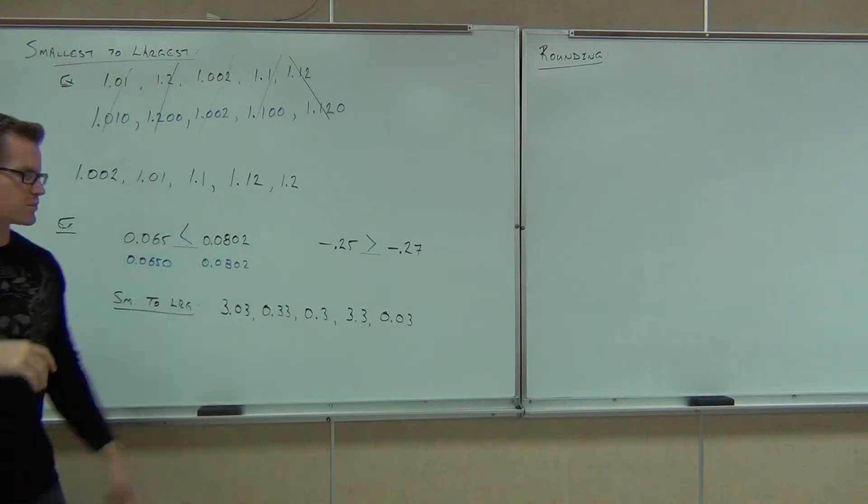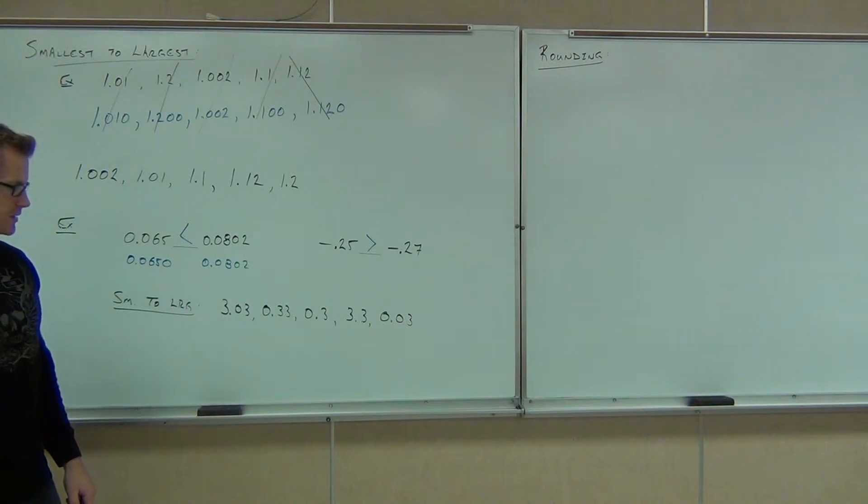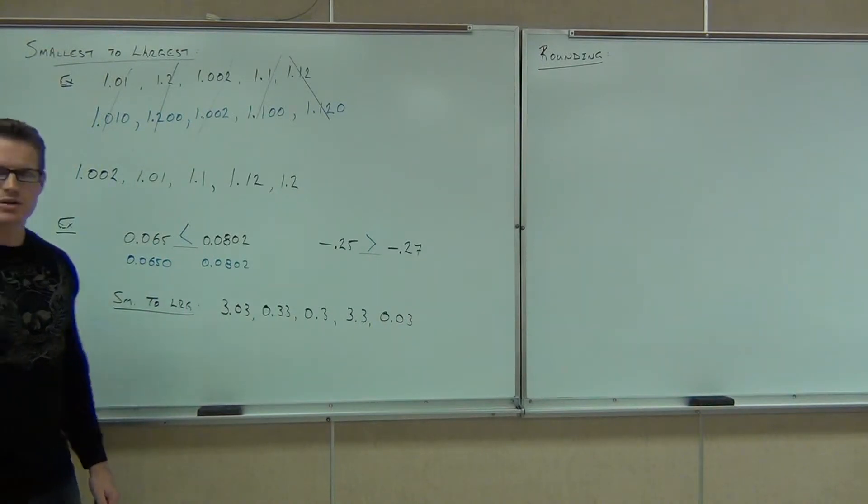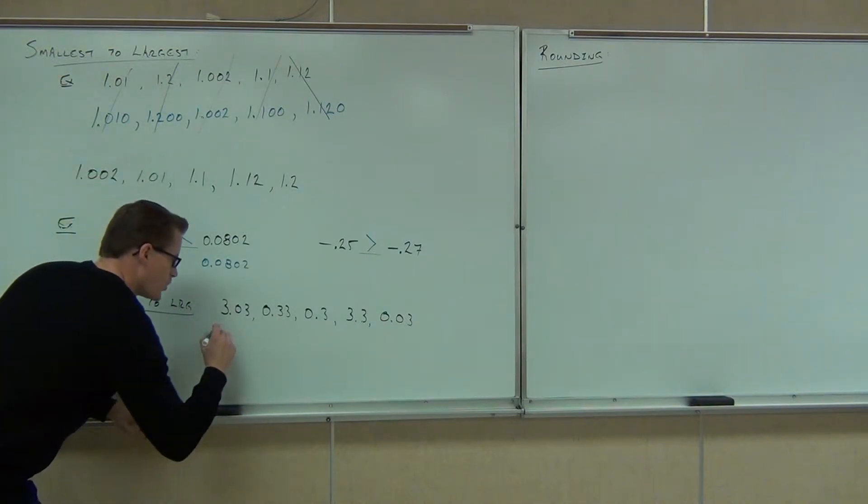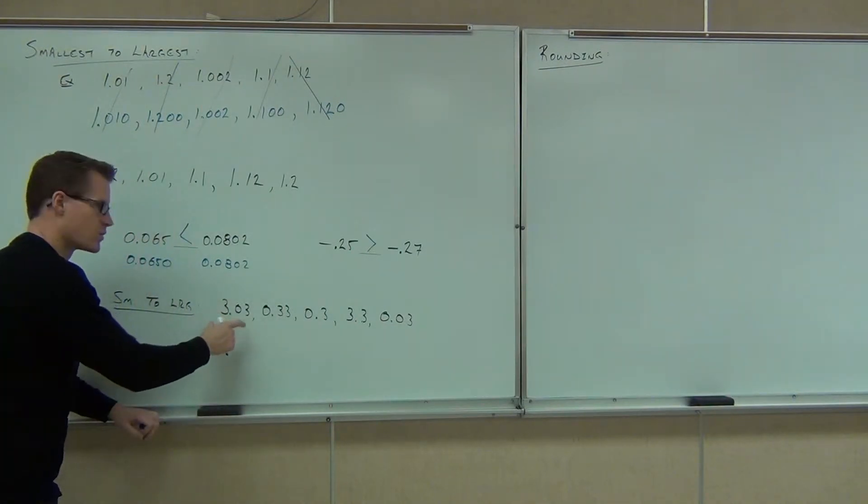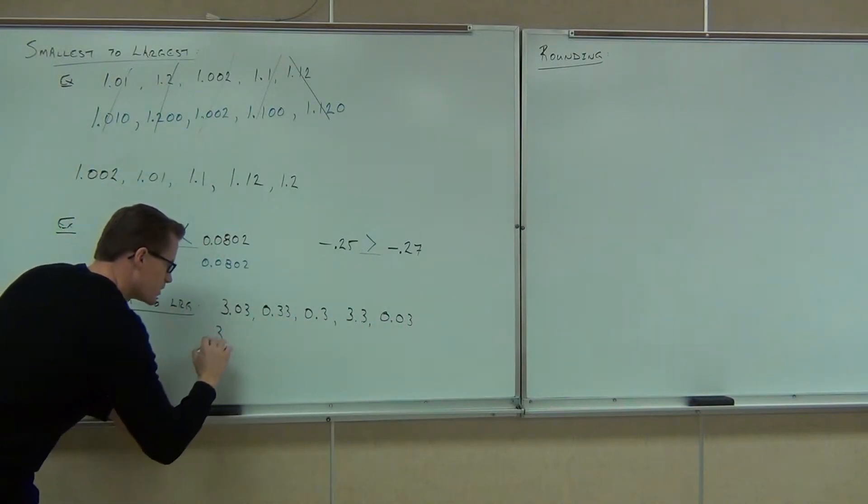How many of you got both of those right? Good, all right. Especially the negative one, that's important. Okay next step. We better go start making those all the same length. I know I've got 3.03, that's the longest number here. We have two decimal places, two decimal places, and two decimal places. So I'm going to leave these ones alone.